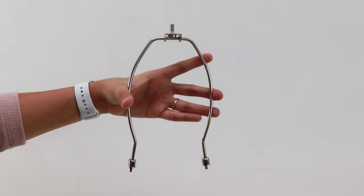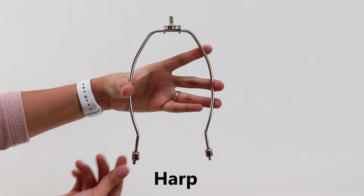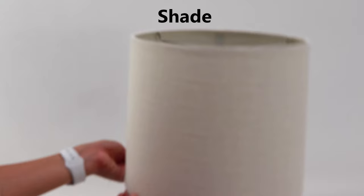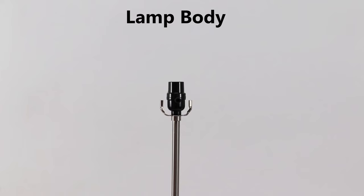A lamp with a shade fastened by a harp and finial comes in four pieces: the harp, finial, the shade, and the lamp body.